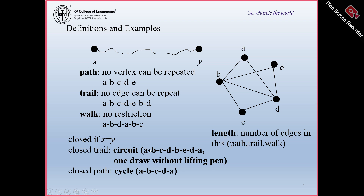A trail in which the starting and ending vertices are the same is called a circuit. For example: A, B, C, D, B, E, D, A — we call this a closed trail because you start from A and reach A, and it is a trail because there is no repetition of edges.